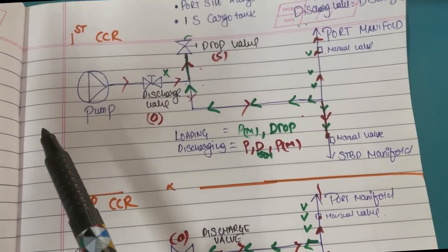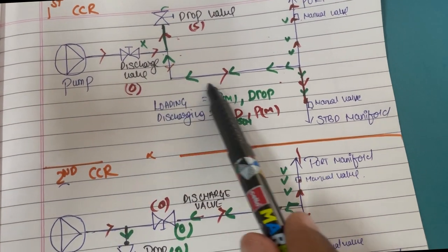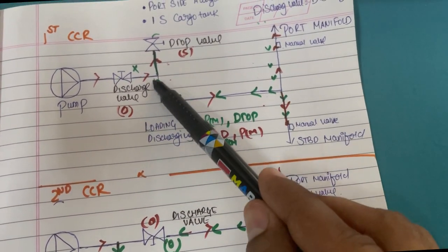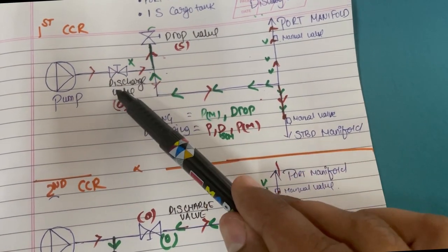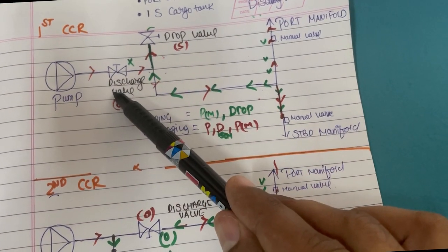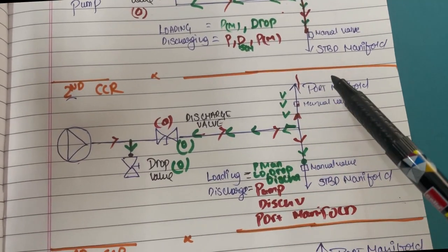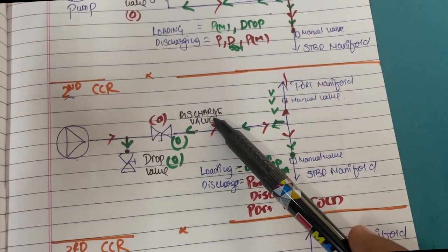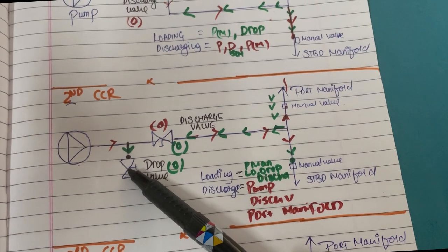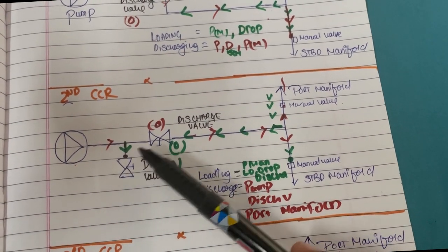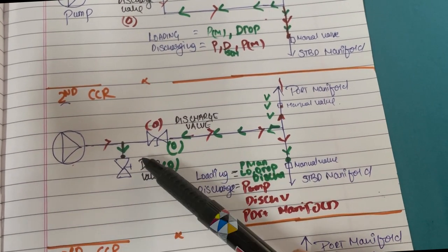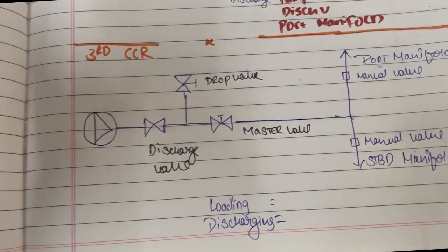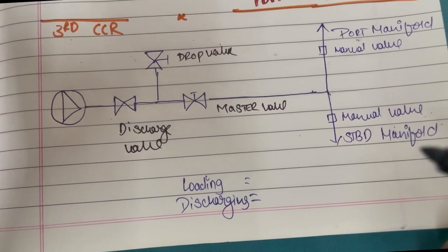So in the second CCR type, for loading: open port manifold valve, loading valve (drop valve), and also the discharge valve — both valves must be open for loading. For discharging: only the discharge valve needs to be open. This is the key difference compared to the first example, where for loading we kept the discharge valve shut.